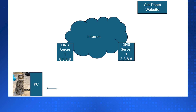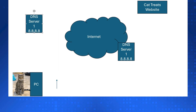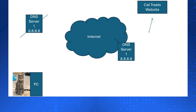Now, what happens if that DNS server were to disappear — to just go down and become unavailable? Cindy's PC has already been configured to look for the DNS server at 8.8.8.8. So her PC would go out to the internet, cross over to a DNS server at 8.8.8.8 located in another part of the world, and that server would then provide Cindy the IP address of her favorite CatTreats website. The packet would be forwarded to the CatTreats website, which would respond, and the packets would be sent back through the internet to Cindy so she can order her favorite cat treats.